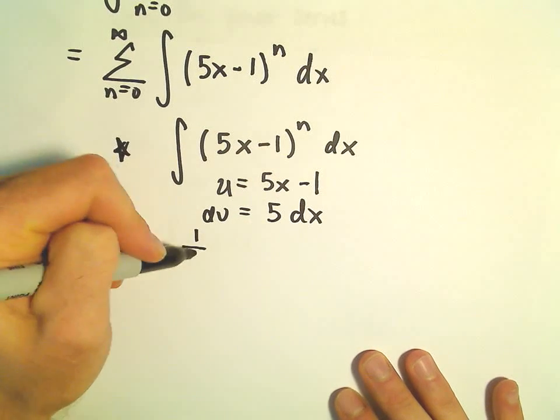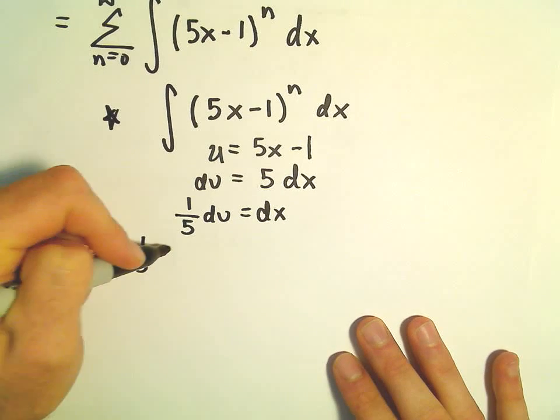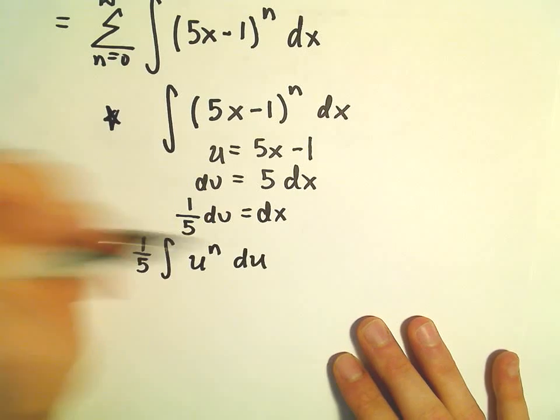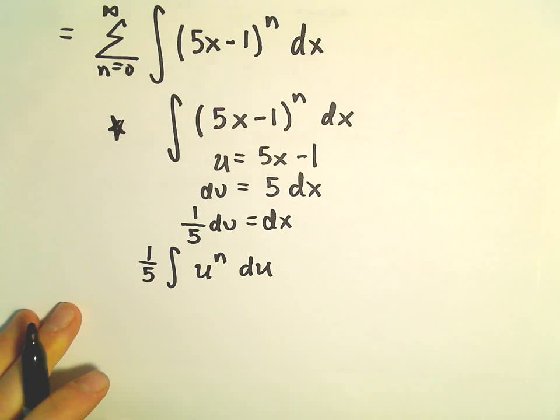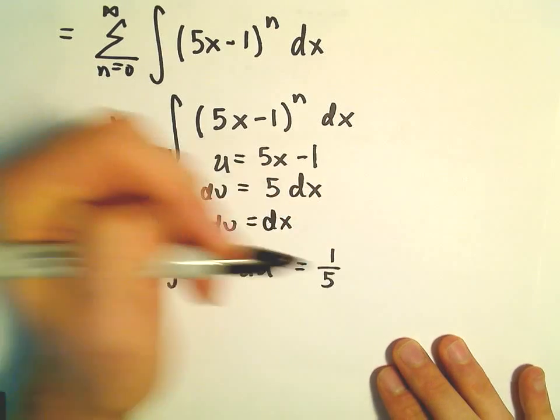So if we divide, we'll get 1 fifth du equals dx. So if we integrate, we'll just have the integral of 1 fifth. We'll have u to the n power, du, after we substitute everything in. And then if we integrate, we'll just be left with 1 fifth.